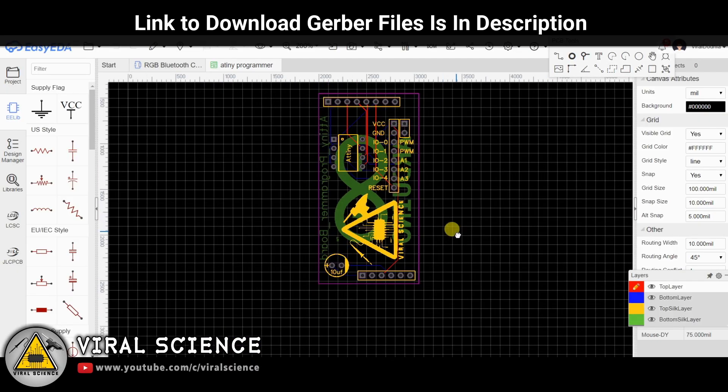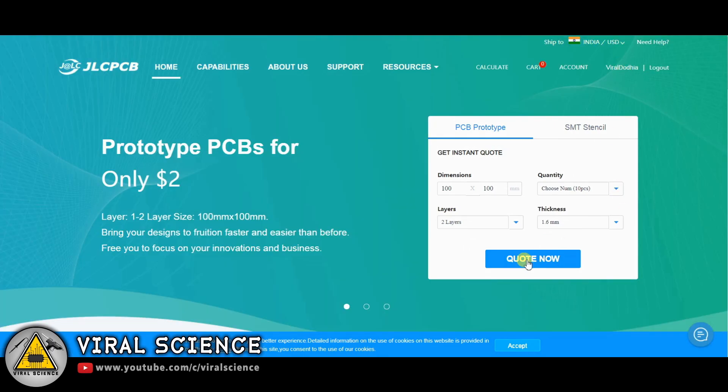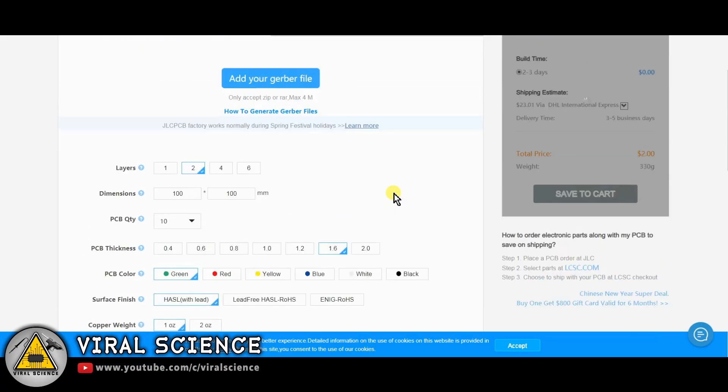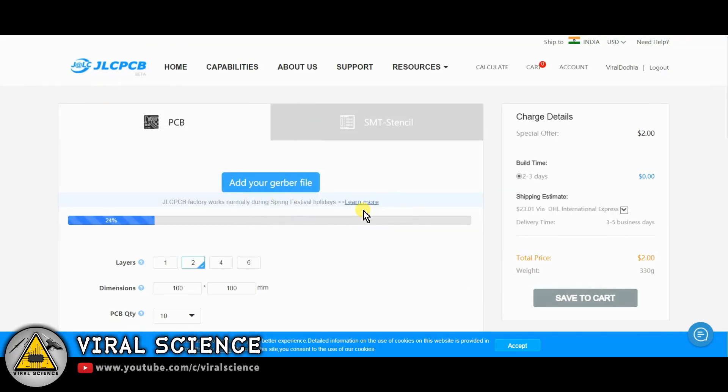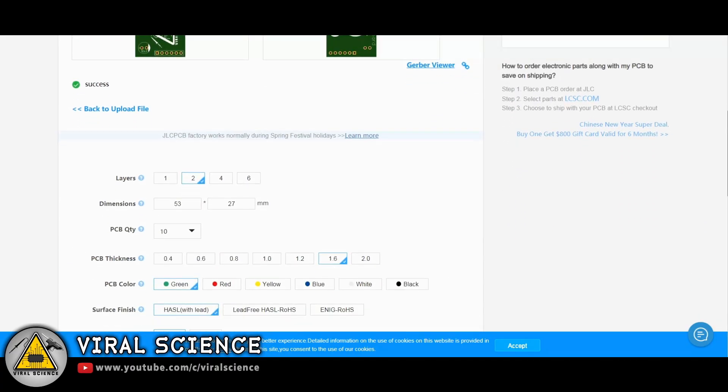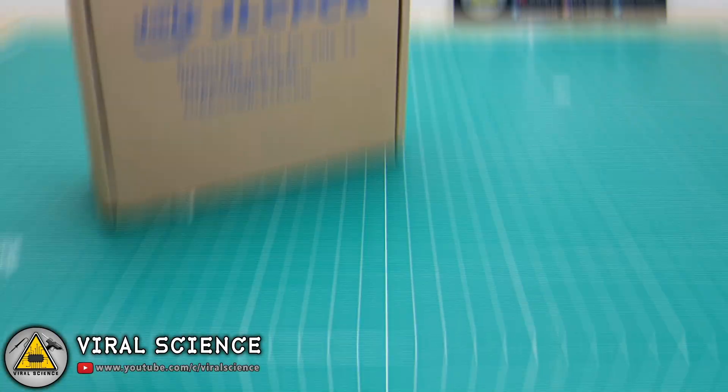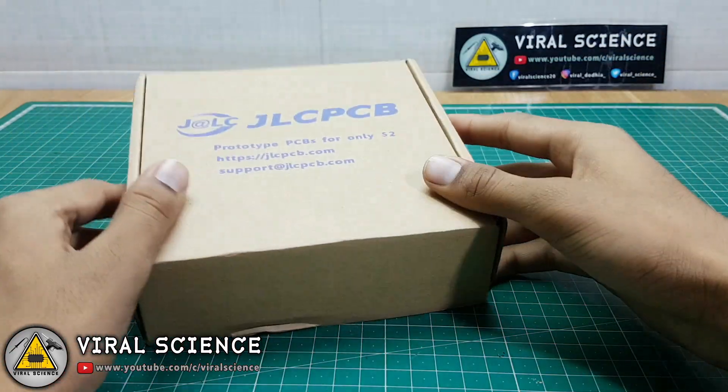Now we'll place the PCB order at jlcpcb.com. Click on quote now and add the gerber files. After adding them, select the quantity and color of your PCBs and place the order. In seven to eight days, I received my order. The PCBs were nicely packed and the quality was very good.